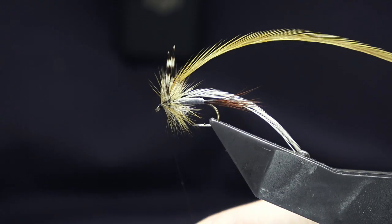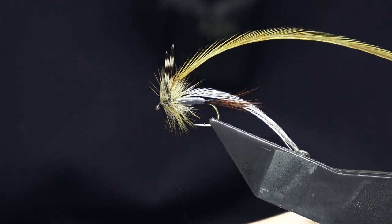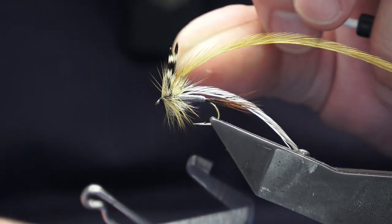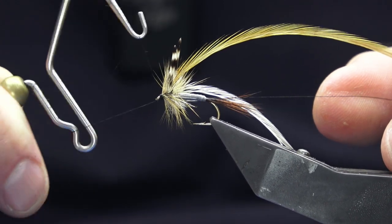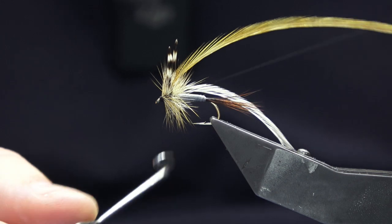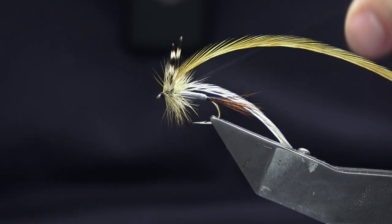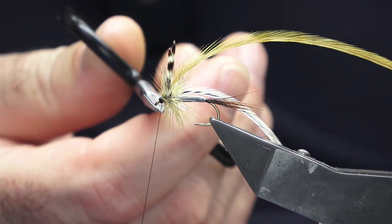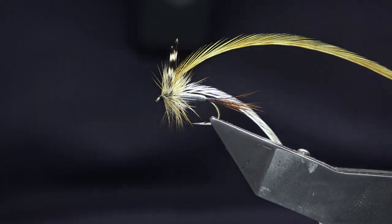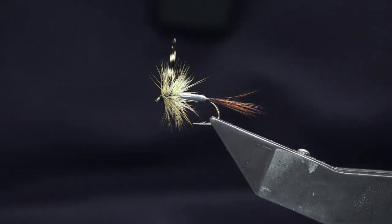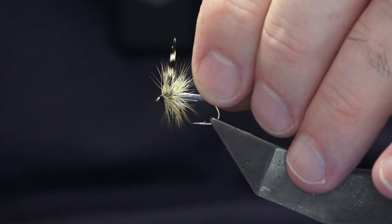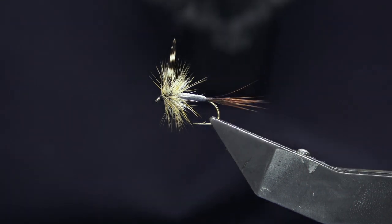Believe it or not, you can also tie this in a size 8, especially if you're fishing it out on the loch - maybe on an Irish loch in a big wave. Sometimes it's good to have a bigger size. Just break these stems off, get the tail sitting nice for us, and neaten the thread turns up.